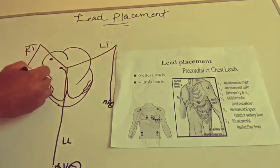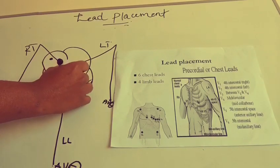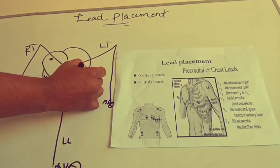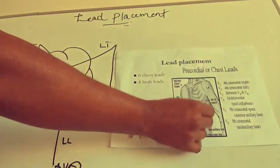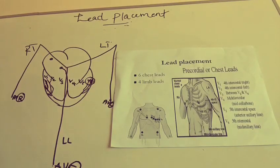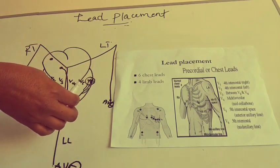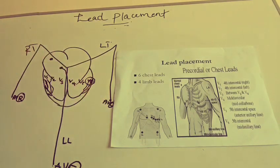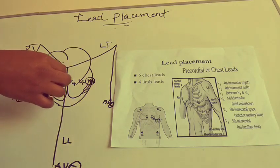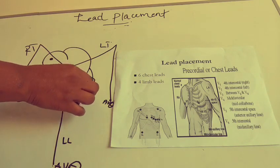When we place the leads that way, they are going to look at the heart in this form. For example, V6 placed on the left side is going to look at the left lateral side of the heart. To diagnose something, the neighboring leads should show the problem. For a left lateral MI, changes should appear in two neighboring leads — ideally V5 and V6.